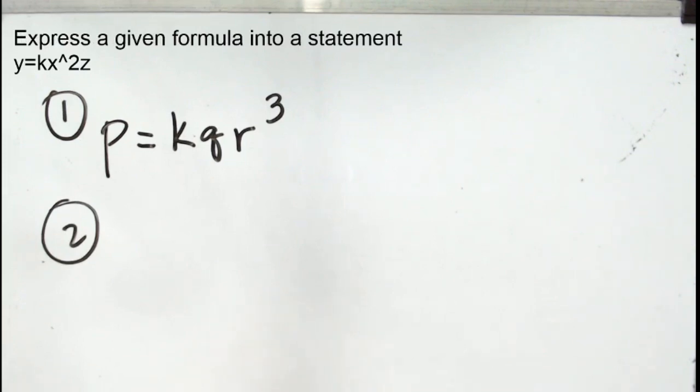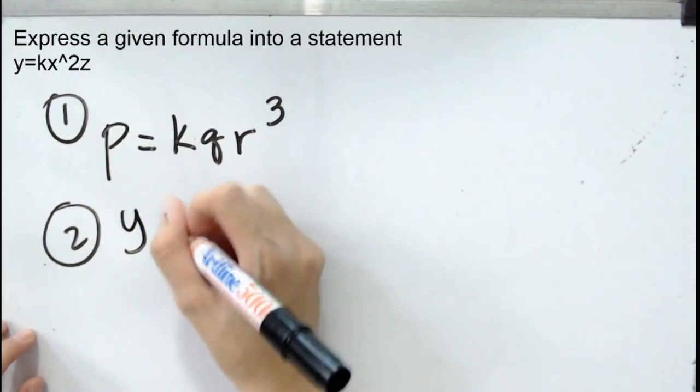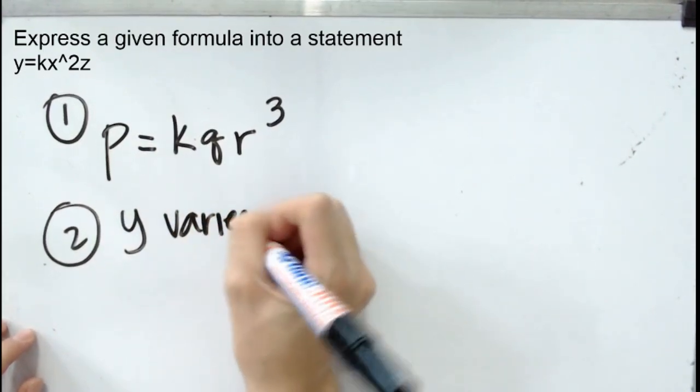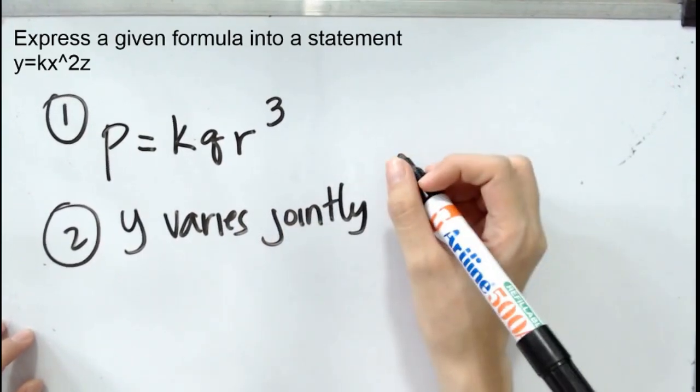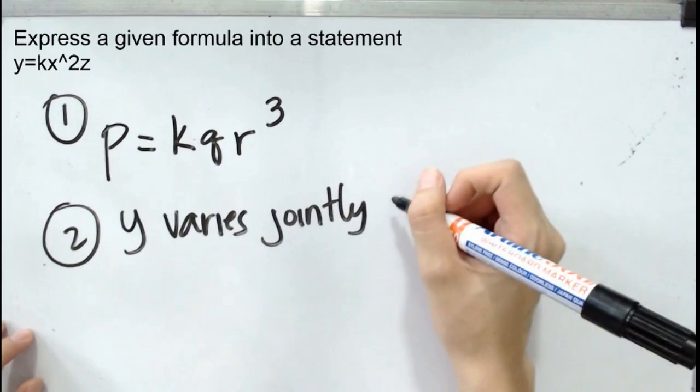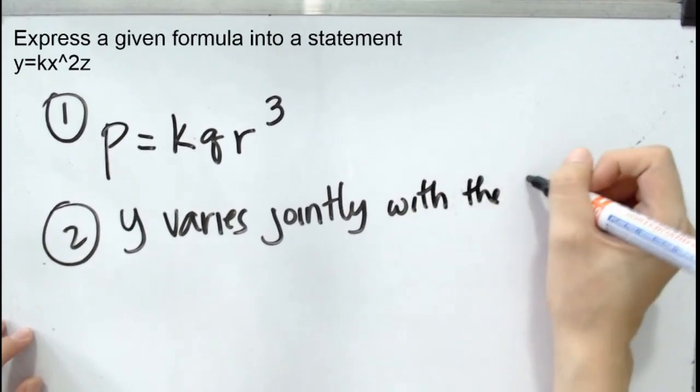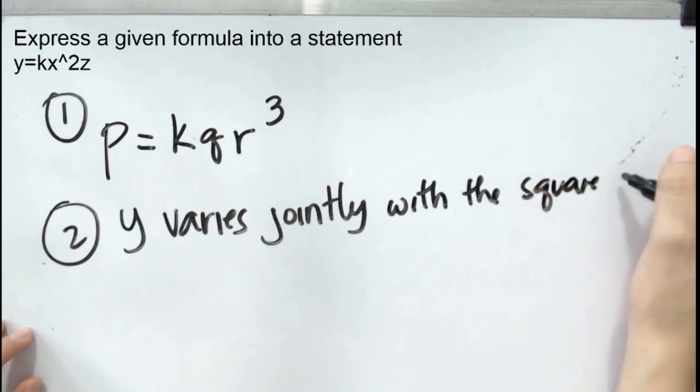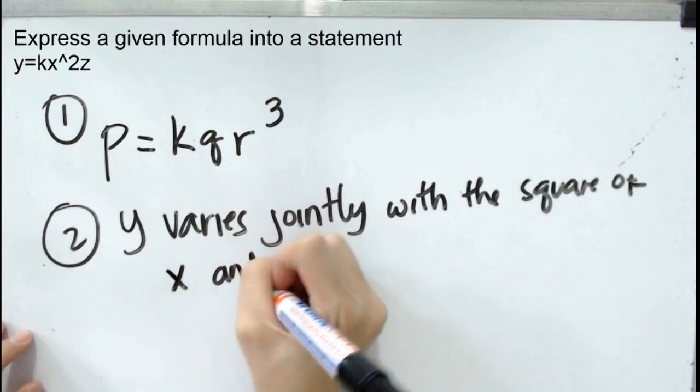Express the given formula into a statement: Y equals KX squared Z. If we write it in statement form, we have Y varies jointly with the square of X and Z.